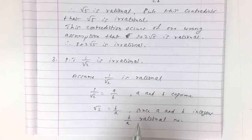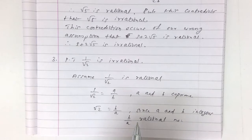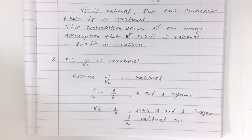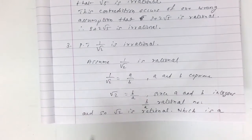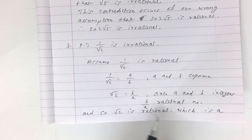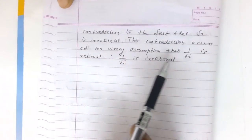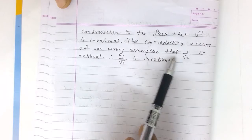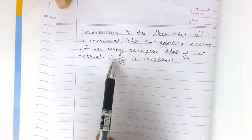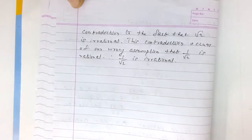We know the fact that root 2 is irrational. Root 2 being rational is a contradiction to the fact that root 2 is irrational. This contradiction occurs because of our wrong assumption that 1 by root 2 is rational. Therefore, 1 by root 2 is irrational.